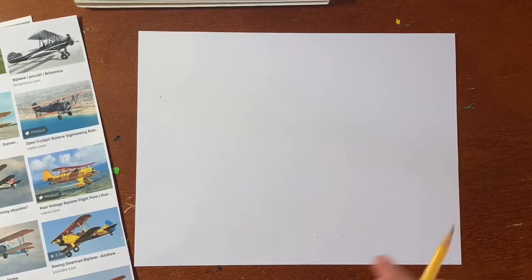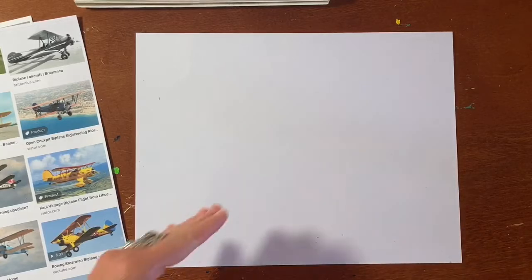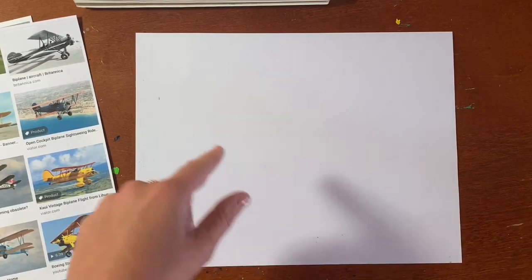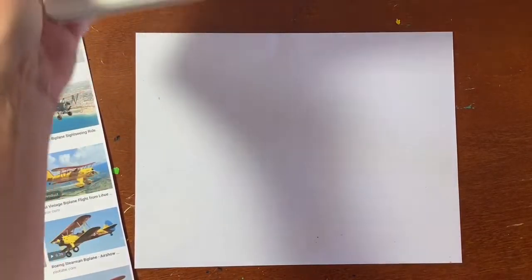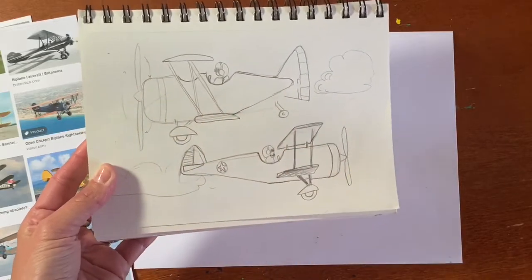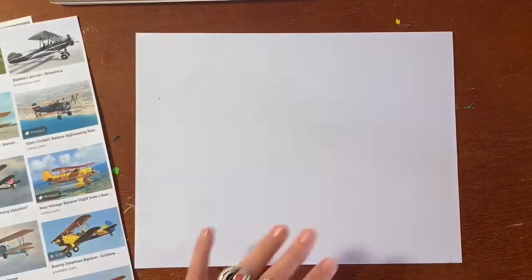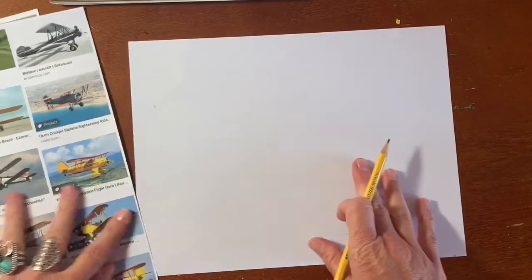My airplane's going to be flying to the side. Now, if you want yours to be flying diagonal, turn your paper diagonal. If you want it to be straight, just follow along with me. I will continue to show you my reference photos that I drew before, just so you can see how I started it.